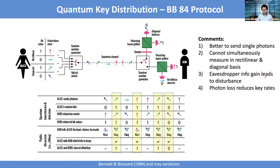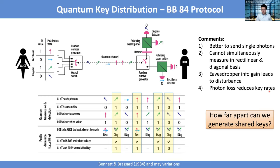Practically, there is a challenge: photon loss reduces the secret key rate, and communication becomes slower the more photons are lost. A natural question is: how far apart can we generate such a secret key for quantum communication? Nowadays there are high expectations — ideally global communication. That's challenging, because it's very difficult to send a single photon to the other side of the earth since current fibers are quite lossy.